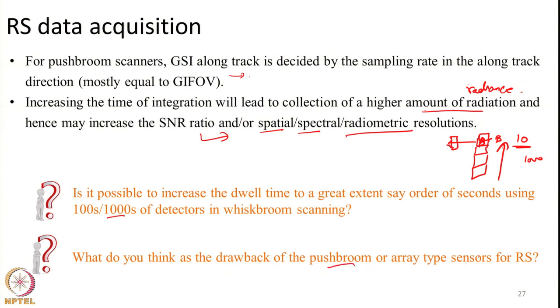The second question is: what is a drawback of push broom or array-type sensors for remote sensing? They have many benefits — increased dwell time, improved signal-to-noise ratio, limited distortions — but there is one important issue to consider. The answer relates to the calibration process: radiance values are stored as DN values in the image through a calibration equation relating observed radiance to produced DN.